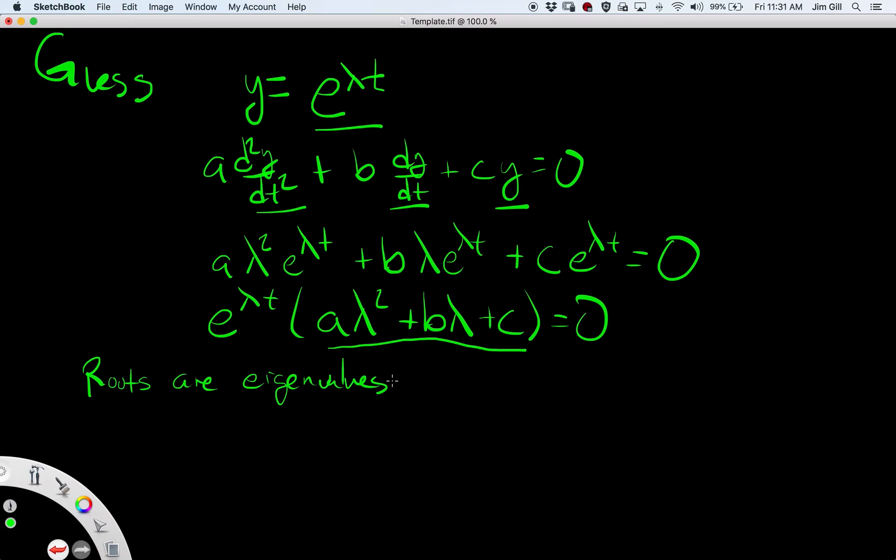Then once we find the roots, then we can find the solutions. So if we get two roots, then we get something like solutions that look like a constant times e to the first lambda one t plus another constant e to the second eigenvalue t.